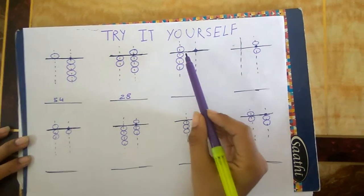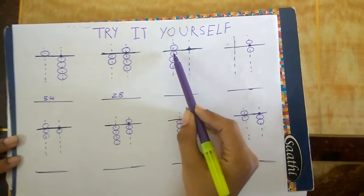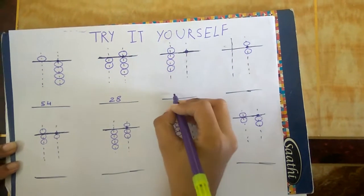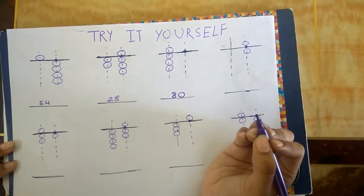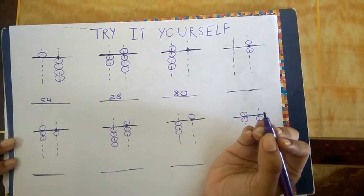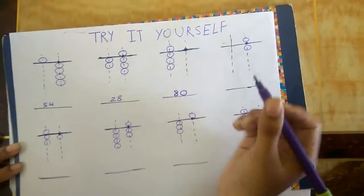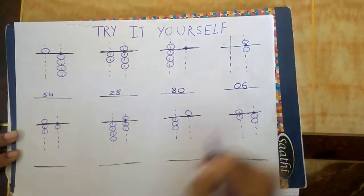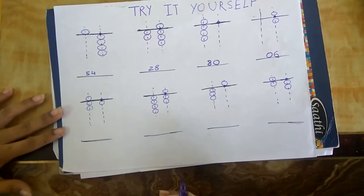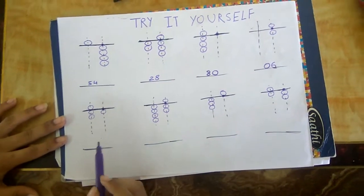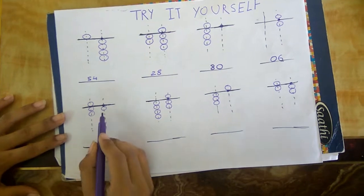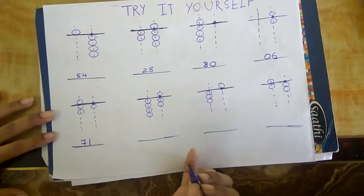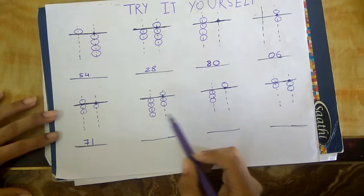In the next sum, 5 is up on the upper side and 3 is on the lower side, together it is 83. In the fourth sum, it is 0 and 6, so it is 6. In the fifth sum, it is 7 and 1, so 71.